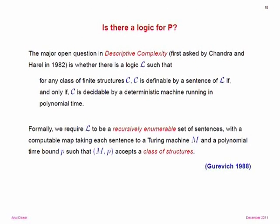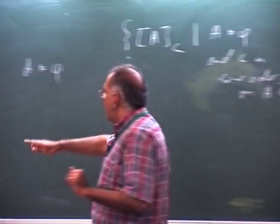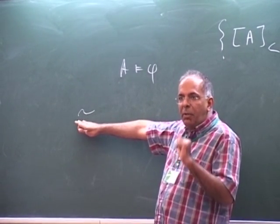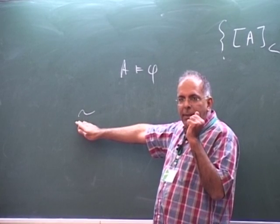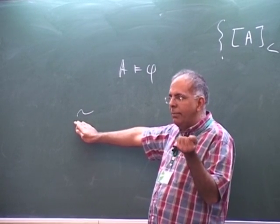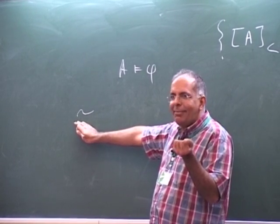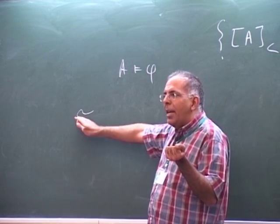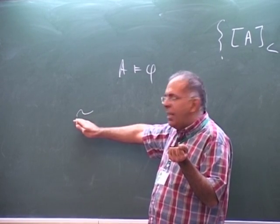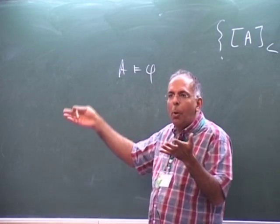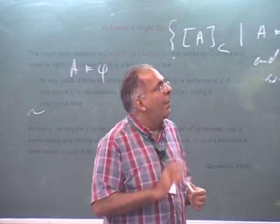The restriction to ordered structures makes this equivalence relation trivial. If structures come with an order, they have a natural encoding as a string and are really strings in disguise, so the difficulties that arise from having to deal with the encoding go away.